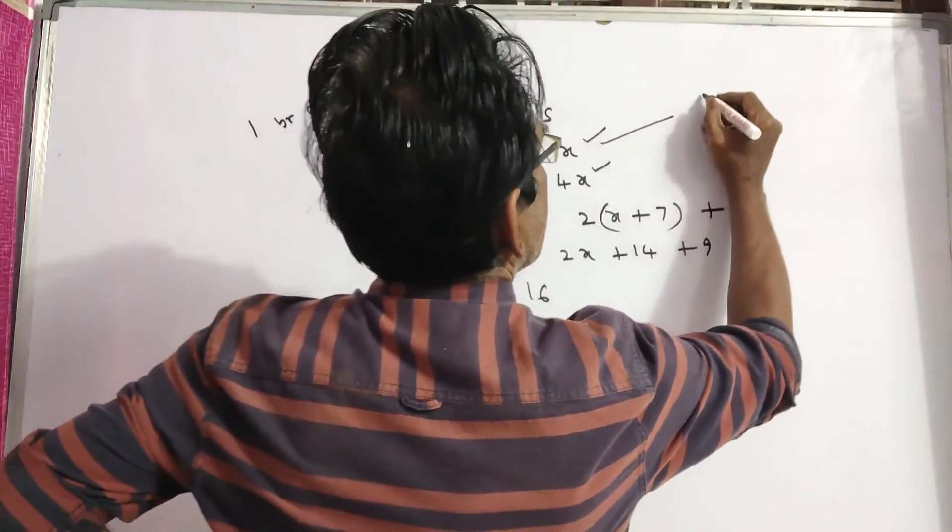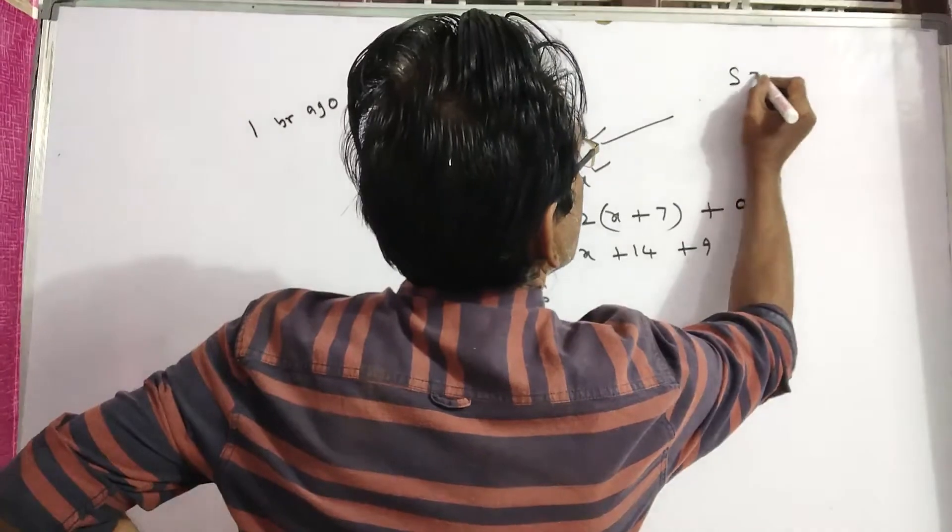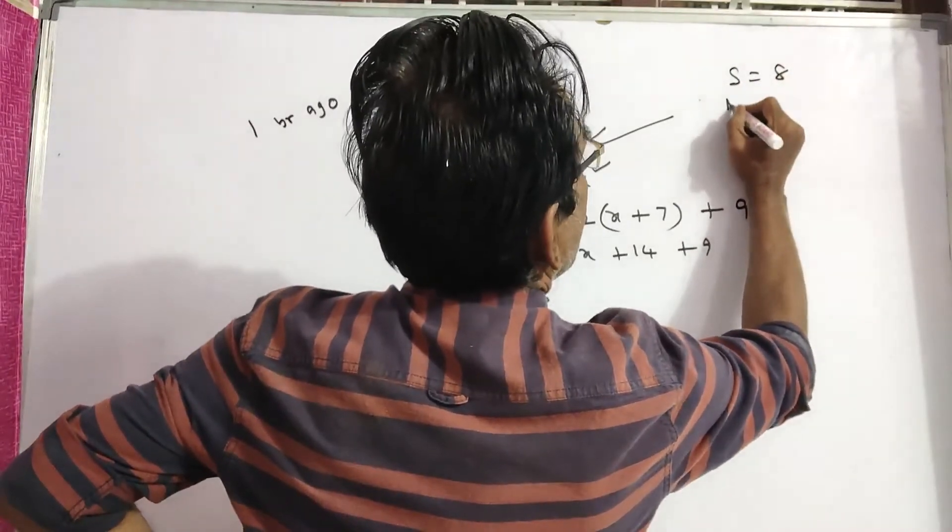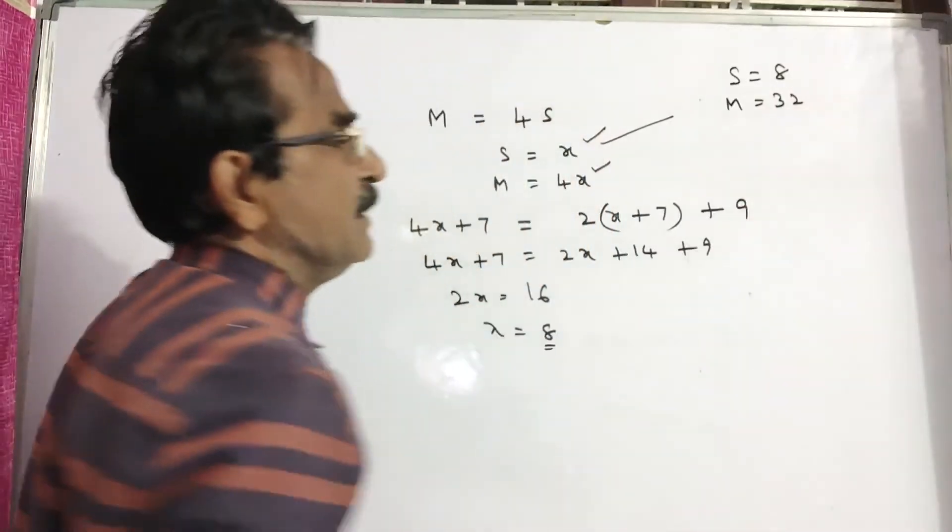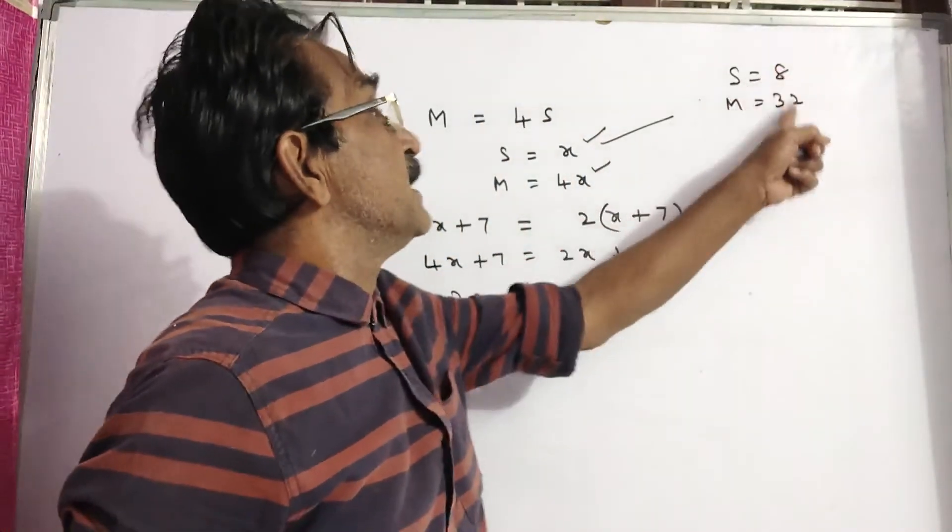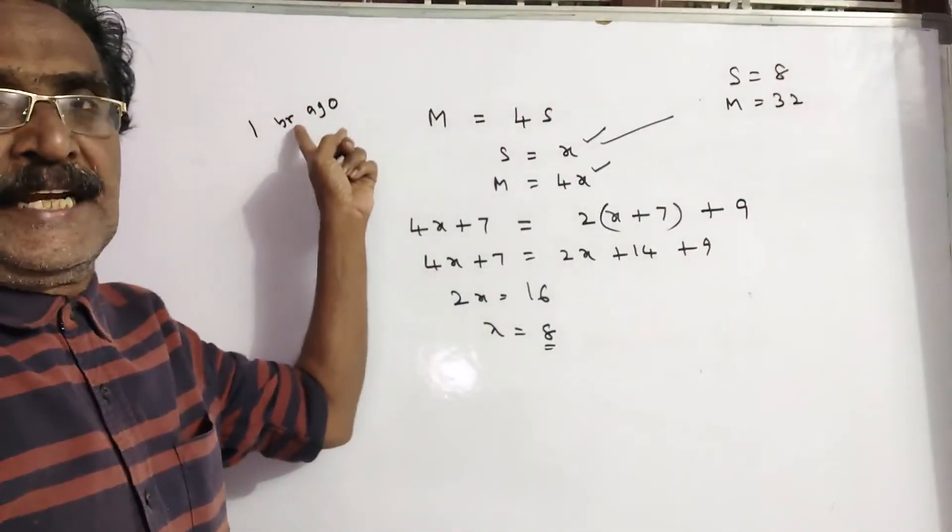So the son's age is 8, and man's age 4X is 32. These are the ages 1 year ago.